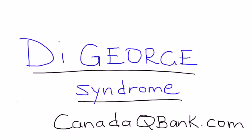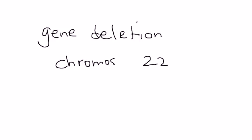DeGeorge syndrome happens because there's a gene deletion in chromosome number 22, and in particular there's a region of the chromosome called Q11. That's the chromosome region that's involved.